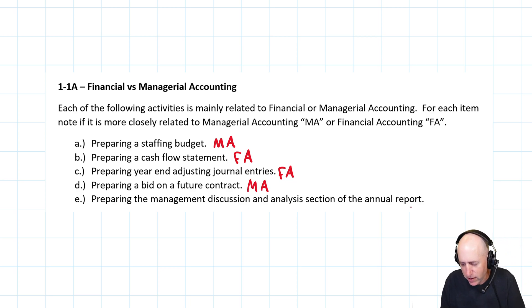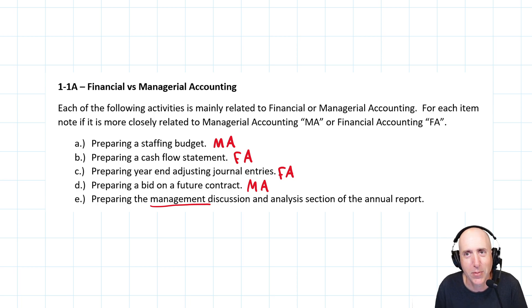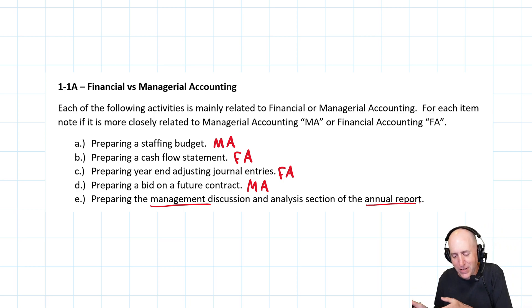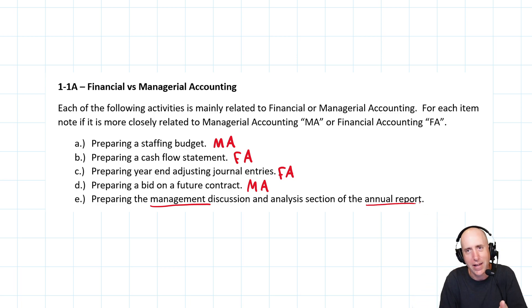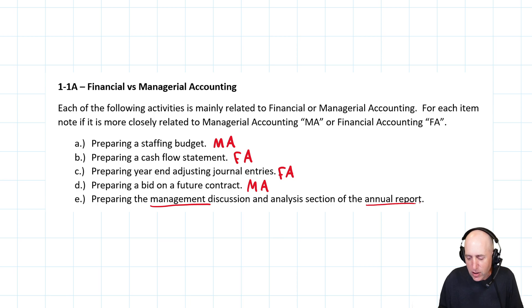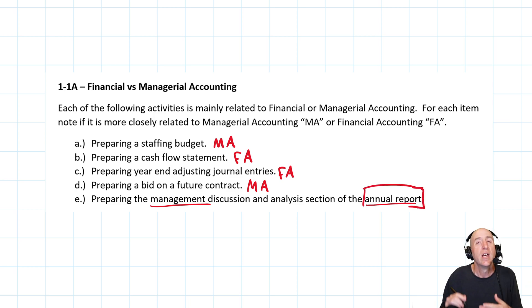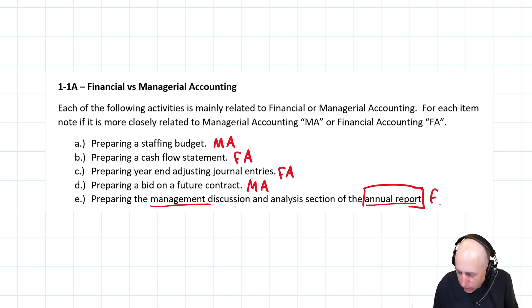Preparing the management discussion and analysis section of the annual report. This is a tricky one — people read the word 'management' and assume it's management accounting. It's not. Managers make internal plans, but the MD&A section is where they report those plans to investors, bankers, and the government — the outside users reviewing financial statements. The annual report is all about outsiders; insiders don't really use it heavily. So this is absolutely financial accounting.